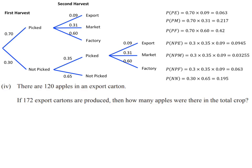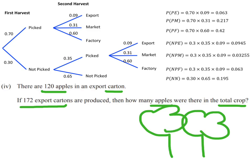The question says we've got 120 apples in an export carton, and 172 export cartons are produced. We want to work out how many apples were there in the total crop. If I think about all the different apple trees at the orchard, all the different apple trees there.